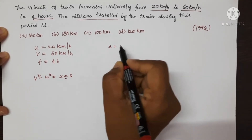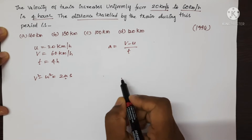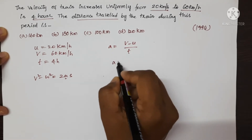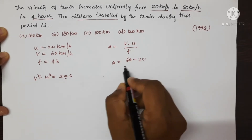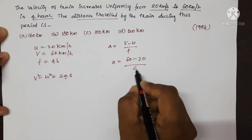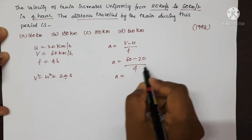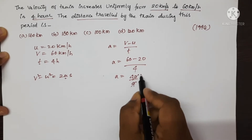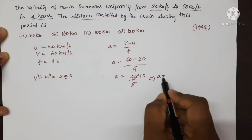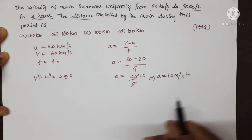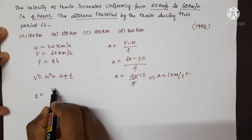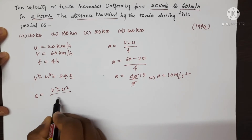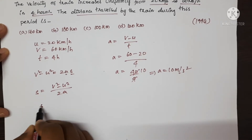Acceleration A = (V − U) / T = (60 − 20) / 4 = 40 / 4 = 10. So the acceleration is 10 km/h per hour. Now substitute into the equation. S = (V² − U²) / 2A. Now substitute the given values.